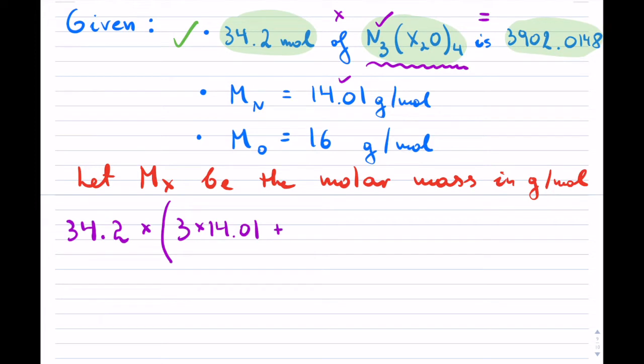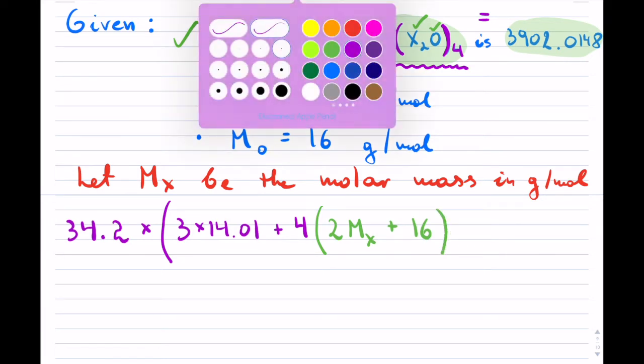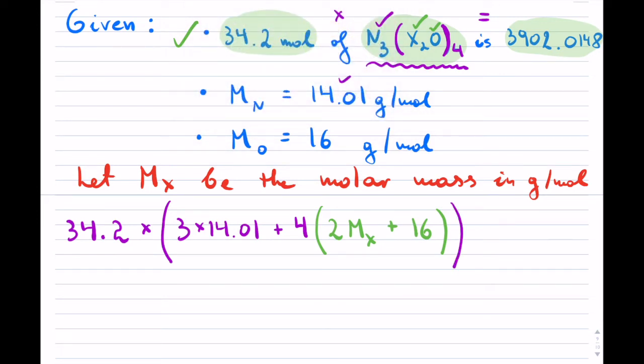Now, this is the tricky part because you have these brackets here. So what we do is we first take the four, and then four of these. I have two of these X's, so I don't know what the molar mass of that X is. So I'm using Mₓ here plus the oxygen, which is inside, and that I do know, which is 16. Now I'm going to close the bracket there, and now I have to close the big bracket because that belongs to the entire thing. And that is supposed to equal to this big number here.